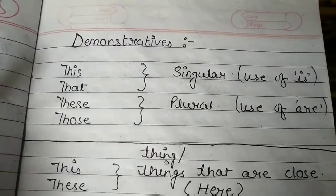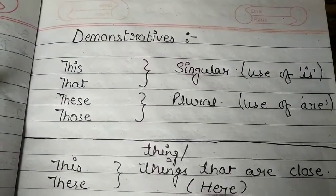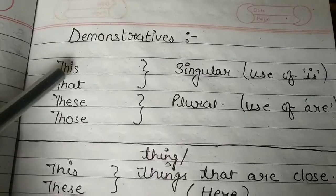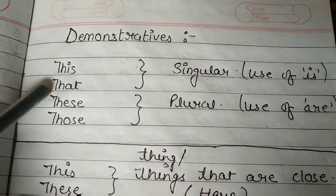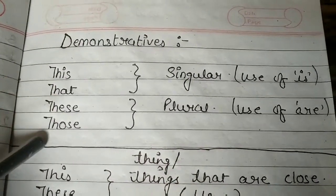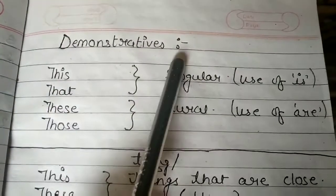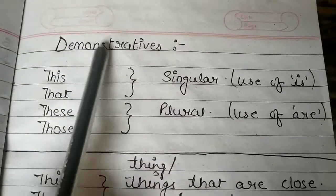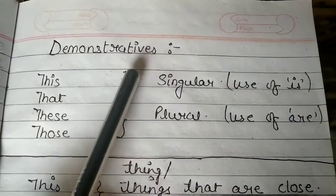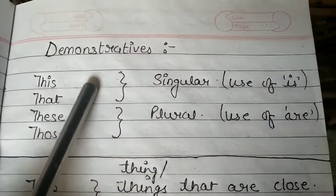Hello everyone, today we are going to learn the use of this, that, these, those. These are the demonstratives. Demonstratives are used to point out specific people or things.